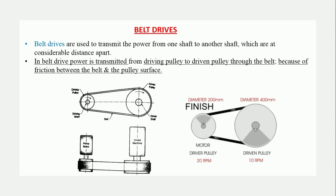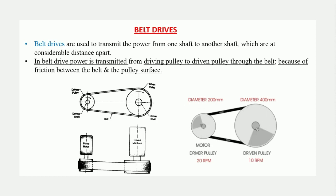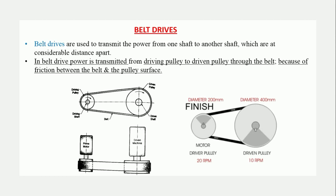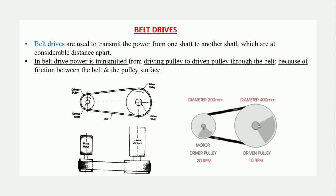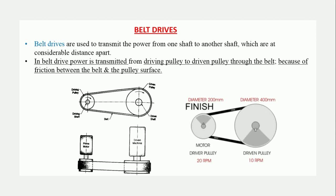To the right side there is an animation showing a driving pulley with a diameter of 200 mm and a driven pulley with a larger diameter of 400 mm. Because of the difference in diameters, there is a speed reduction. On the driving side the speed is 20 RPM, and at the driven end the speed is reduced to 10 RPM. This is the simple concept by which we can transmit power from one shaft to another.